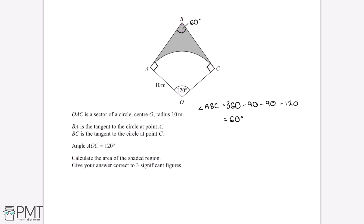The best way to do this is to split the quadrilateral in half to form two right-angled triangles. This means angle ABO will be half the size of what it was, making it 30 degrees. And angle BAO will again be half the size, making it 60 degrees.